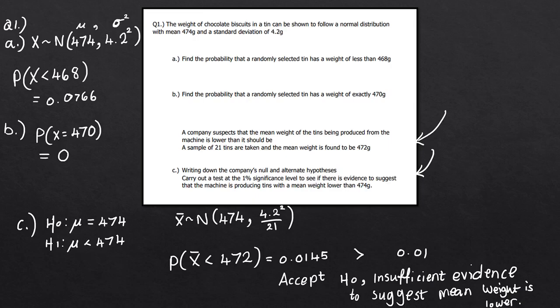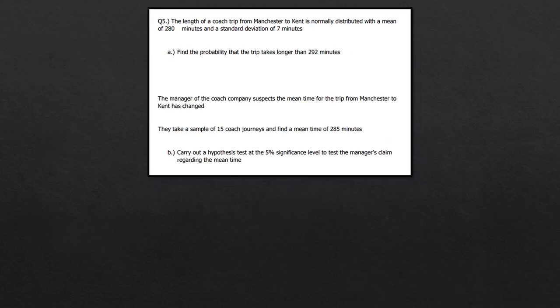Now let's take a look at the final question. The length of a coach trip from Manchester to Kent is normally distributed with a mean of 280 minutes and a standard deviation of seven minutes. For part A, we need to find the probability that the trip takes longer than 292 minutes.